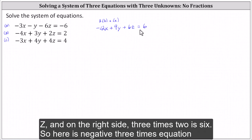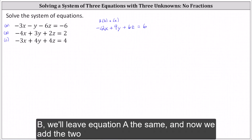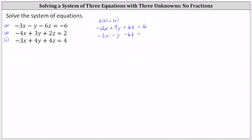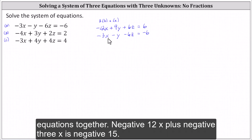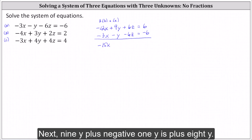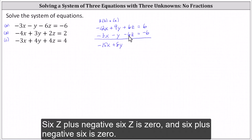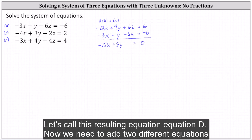So here is three times equation B. We leave equation A the same. Now we add the two equations together: negative 12X plus negative three X is negative 15X; nine Y plus negative one Y is plus eight Y; six Z plus negative six Z is zero, and six plus negative six is zero. Let's call this resulting equation D.